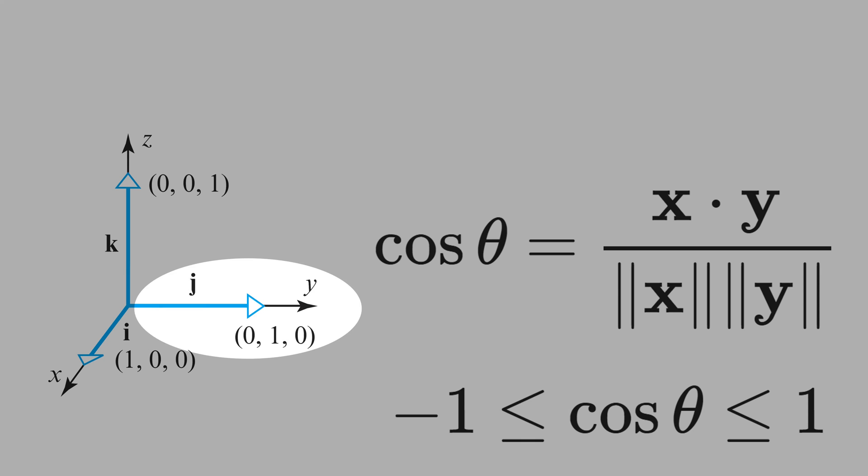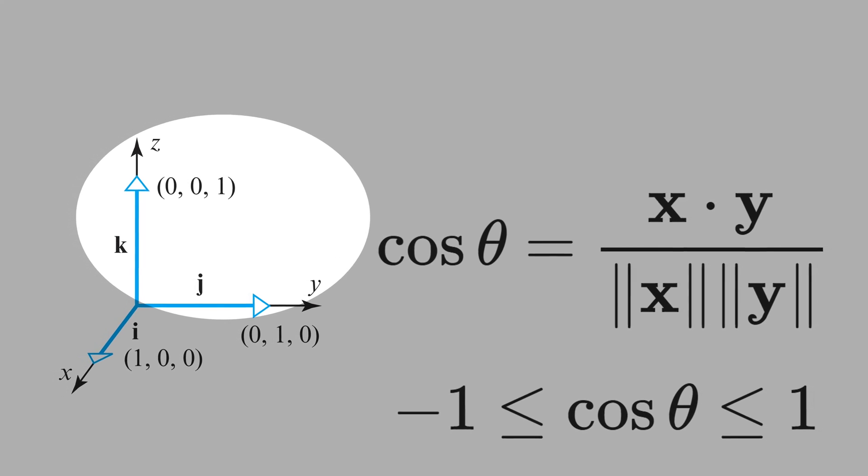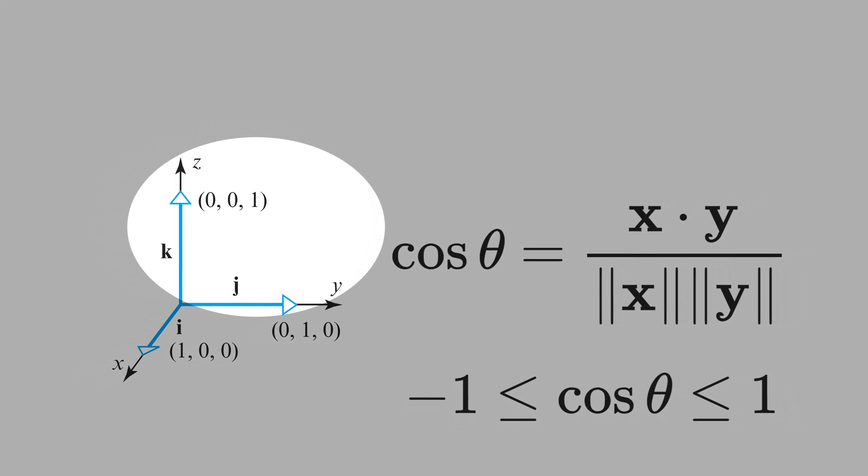Let's take j as a reference vector. If you have cos theta equal 1, that means that the vector has the same direction of j. If cos theta equals 0, that means the direction is the vector k, they form 90 degrees. And if cos theta is minus 1, that means that the other vector is in the opposite direction of the vector j.